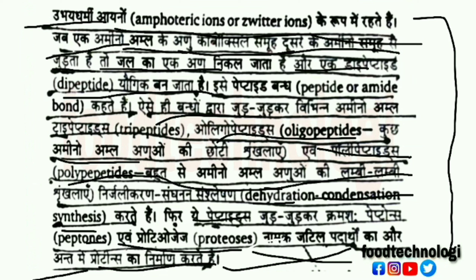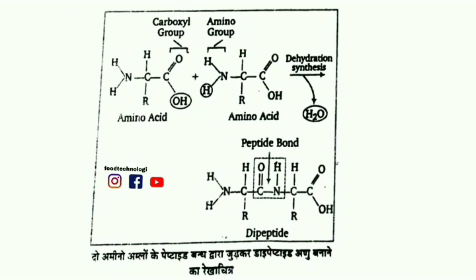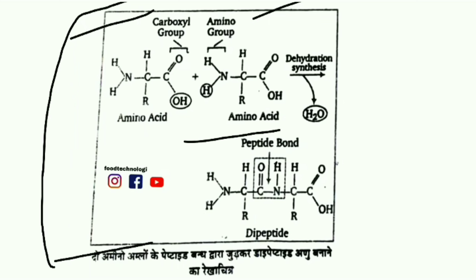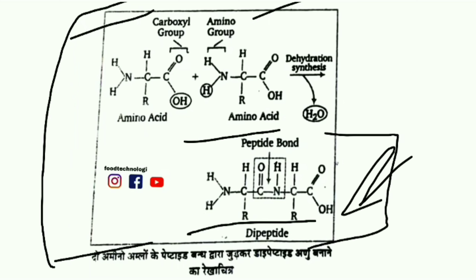These peptides together form peptones and proteoses, complex compounds, and finally proteins are formed. Two amino acids join via a peptide bond between the carboxyl and amino groups to form a dipeptide — this diagram illustrates that process.